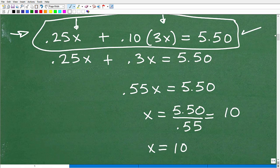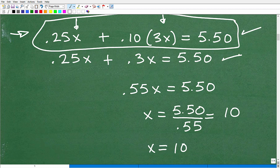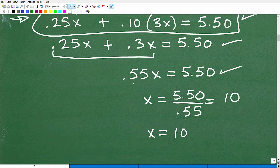At this point, you can apply your outstanding algebra solving skills to solve for X. We got 0.25X plus 0.10 times 3X, which is 0.3X, equals 5.50. You can use a calculator to help you. When we add these two terms up, 0.25X plus 0.3X is 0.55X equals 5.50. Then we divide both sides of the equation by 0.55. So 5.50 divided by 0.55, you get X equals 10.